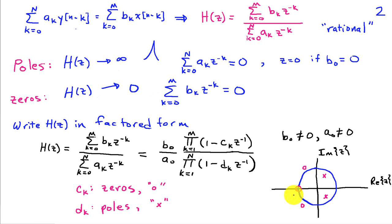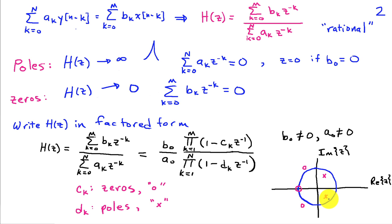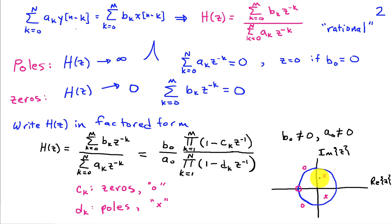For example, as shown here, there's a pair of poles at one location, a pair of zeros, and another zero on the real axis. The location of these poles and zeros tells us a lot about the behavior of the system.